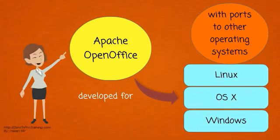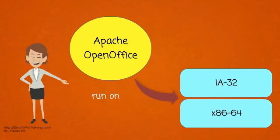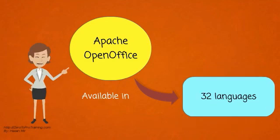Apache OpenOffice is developed for Linux, OSX, and Windows, with ports to other operating systems. It can run on IA32 and x86-64 platforms. It is available in 32 languages.